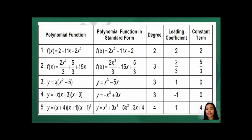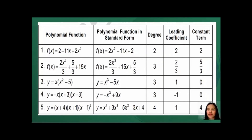Number 3: y = x(x² + 5). Distributing: x times x² equals x³, and x times negative 5 is not applicable here — x times 5 gives 5x, so y = x³ + 5x. This is already in standard form. The highest exponent is 3, so the degree is 3. The leading term is x³, leading coefficient is 1. There is no constant term, so it is zero.